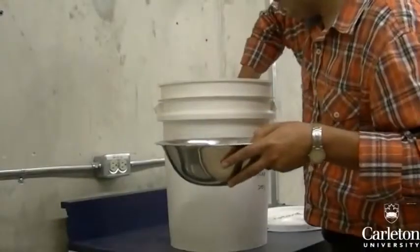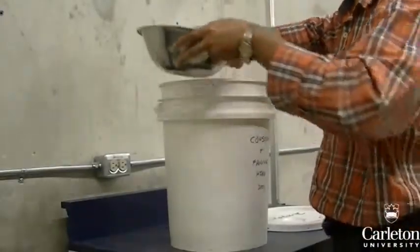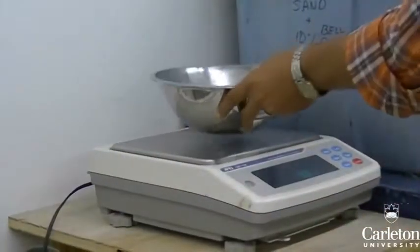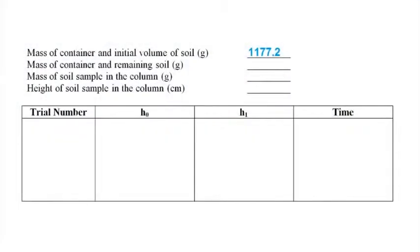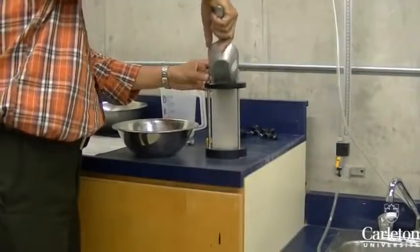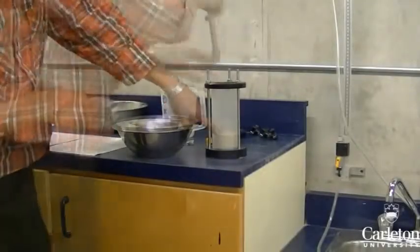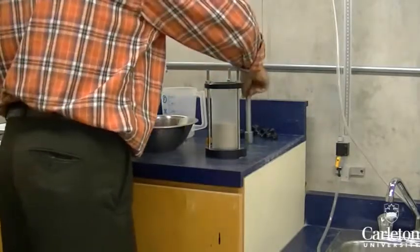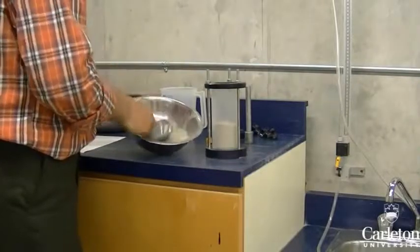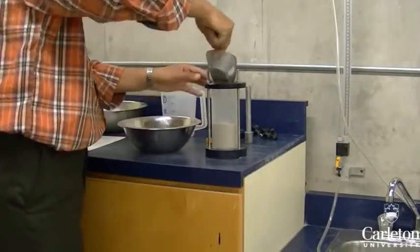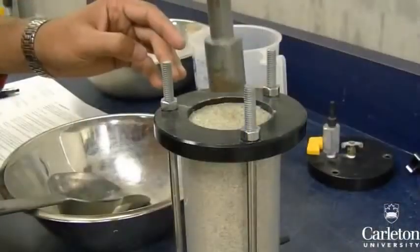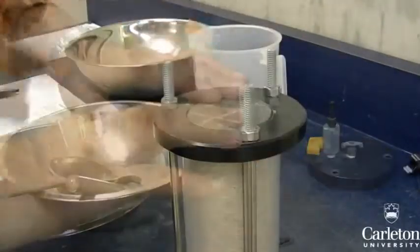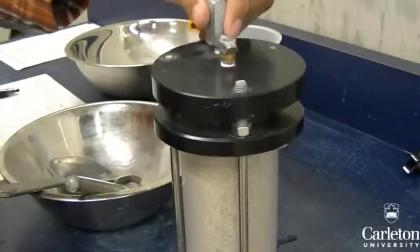Now obtain a soil sample. Similarly to the constant head test, measure out approximately one kilogram of soil into a container and record the mass of the container plus soil. Place the soil in the test cylinder, again compacting the soil into about three layers. In this experiment we are using a fine-grained sand, although this test is best done with silts or clays. Level the soil at the top of the cylinder, place the second porous stone on top of it, then thread the end cap on and secure it.